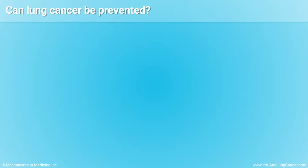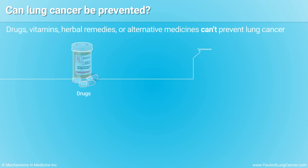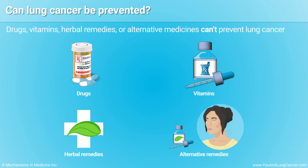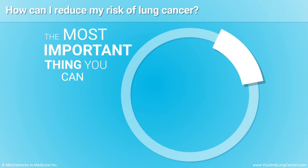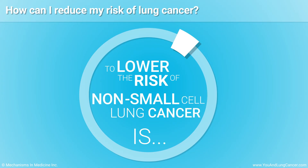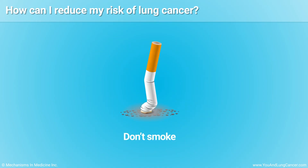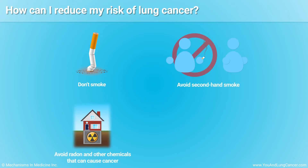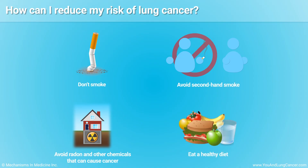So far, researchers haven't found any drugs, vitamins, herbal remedies, or alternative medicines that can help prevent lung cancer. The most important thing you can do to lower the risk is: don't smoke cigarettes, cigars, or pipes. Other things you can do: avoid secondhand smoke, avoid radon and other chemicals that can cause cancer, and eat a healthy diet.